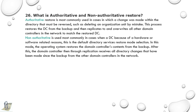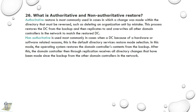26th question: What is authoritative and non-authoritative restore? Authoritative restore is most commonly used when a change was made within the directory that must be reversed, such as deleting an organizational unit by mistake. Once restored, it replicates to and overwrites all other domain controllers in the network to match the restored DC. Non-authoritative restore is used when a DC fails due to hardware or software reasons; this is the default directory services restore mode. Once restored, the domain controller receives all directory changes made since the backup from other domain controllers in the network through replication.